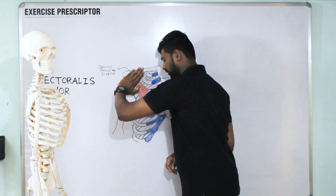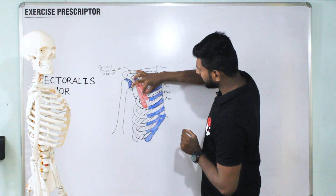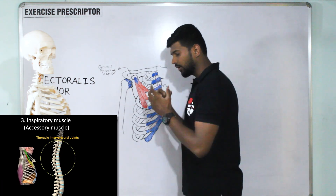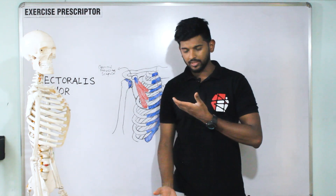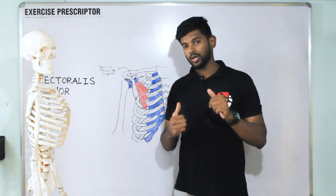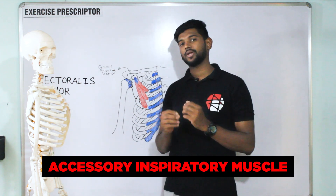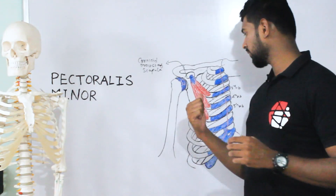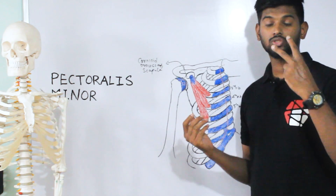Next, looking at rib movement toward the coracoid process — with the coracoid process fixed, the fibers run more vertically. When the muscle contracts it helps to elevate the ribs, which happens when we take a deep breath. Therefore, the pectoralis minor is also called an accessory inspiratory muscle.